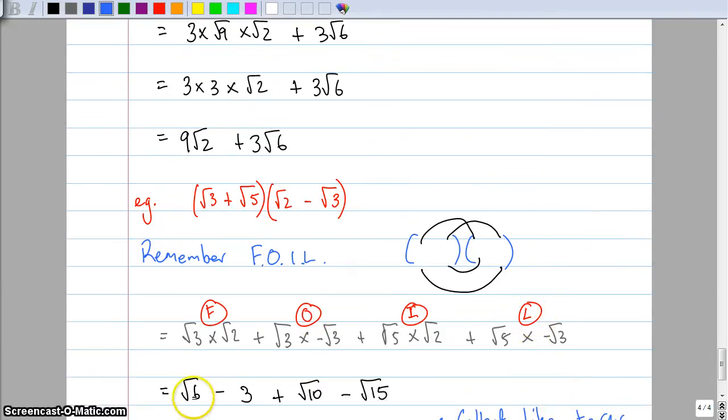So it becomes root six. Root three multiplied by negative root three. Whenever you've got the same square root multiplied with each other, it basically cancels out the square root sign. So that becomes, root three times root three is three. Root ten times root ten is ten. Root a hundred times root a hundred is a hundred. So root three times negative root three becomes negative three, plus root ten minus root fifteen.